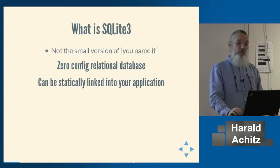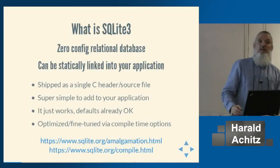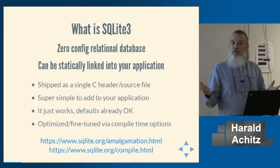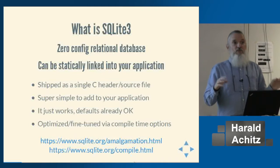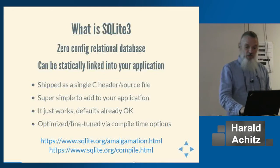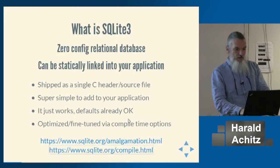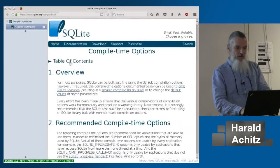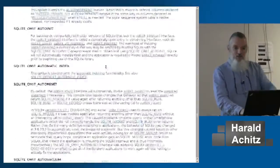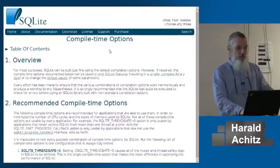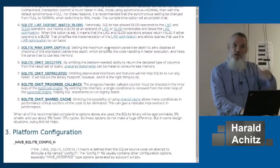SQLite is a zero-config relational database that can be statically linked to your application. It's shipped as a single C header and a C source code file, so it's very easy to add to your project. The defaults are fantastic, but you can fine-tune with many compile-time options. Zero-config doesn't mean there's nothing to configure — you just need to read the first chapter for the most common settings when getting up and running.